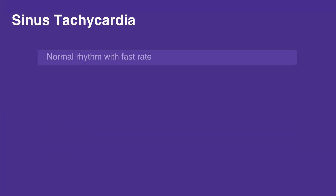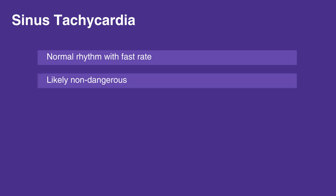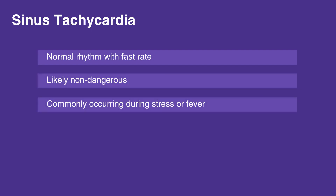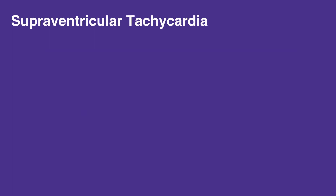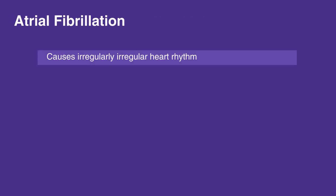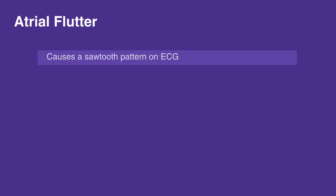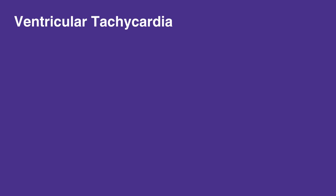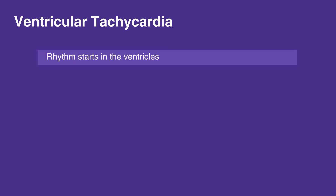Sinus tachycardia is a normal rhythm with a fast rate, is likely non-dangerous, and commonly occurs during stress or fever. Supraventricular tachycardia is a rhythm that starts above the ventricles. Atrial fibrillation causes an irregularly irregular heart rhythm. Atrial flutter causes a sawtooth pattern on ECG. Ventricular tachycardia is a rhythm that starts in the ventricles.